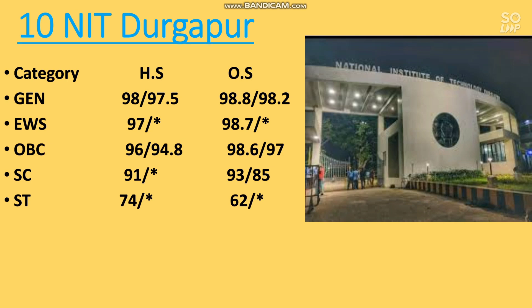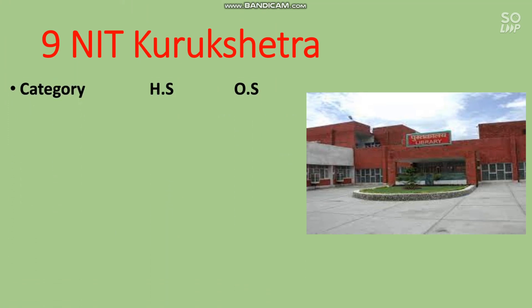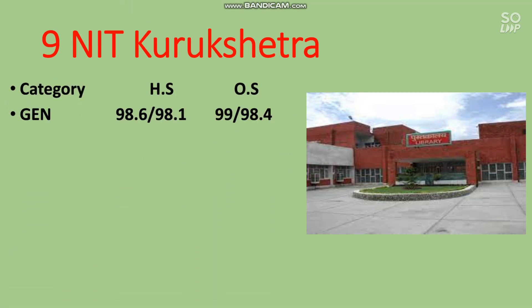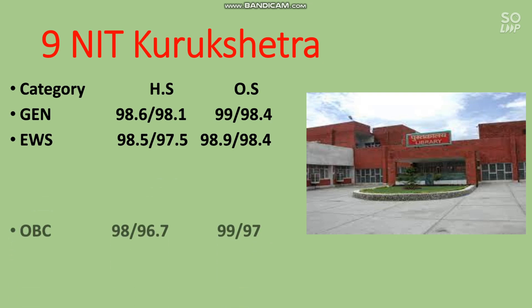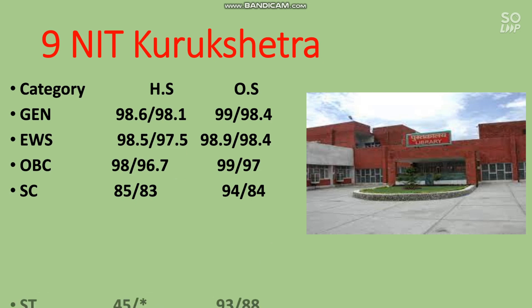Here is number 9, NIT Kurukshetra. The cutoff for the EC branch is: General — 99 percentile, EWS — 98.9, OBC — 99, SC — 94, and ST — at least 93 percentile to get a seat in the EC branch at NIT Kurukshetra.